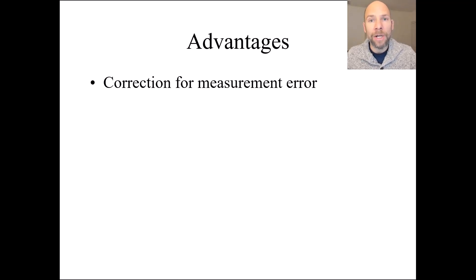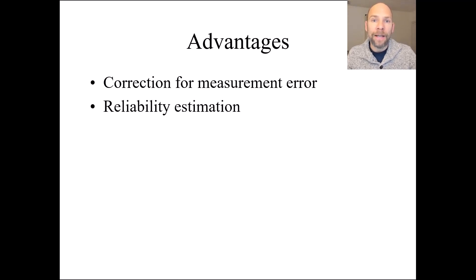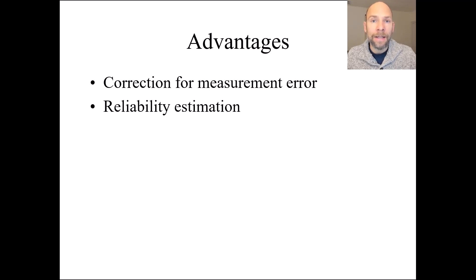In factor analysis and SEM, that correction is built into the model, so we don't need to apply a correction for attenuation by hand. It is part of our measurement model and does that simultaneously for all variables for which we have multiple indicators. As a byproduct of the analysis, we also obtain estimates of the reliabilities of the indicators, so we can learn about the psychometric properties of our scales or items.